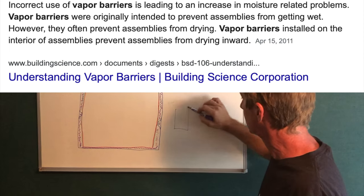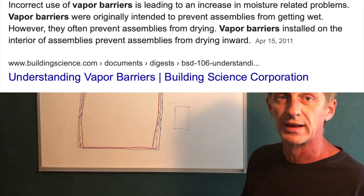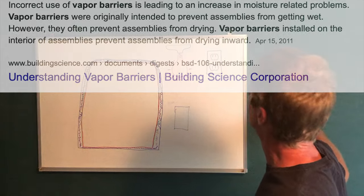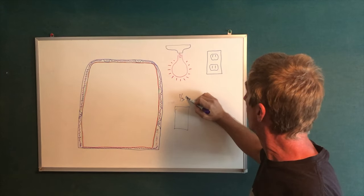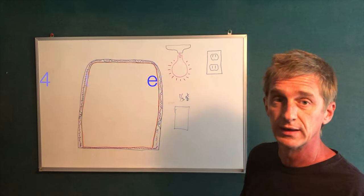A four by eight sheet inside a house, a four by eight sheet of wall, takes in about one third of one quart of water over the heating season.